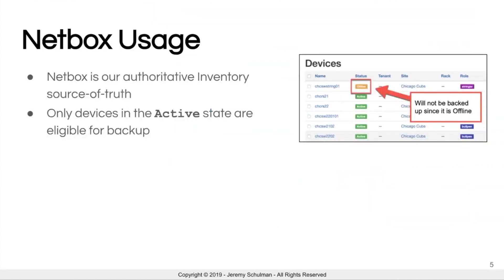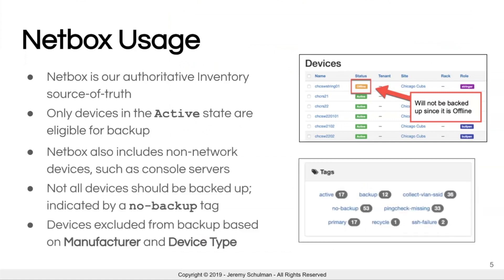Specifically with NetBox, it is our inventory source of truth. We only want to back up devices that are in the active state — whether a user manually put a device into an offline state for maintenance, or our audit remediation systems automatically set that offline state. NetBox also includes devices that are not network-oriented, like console servers. We use the tagging mechanism within NetBox to tactically say which devices we don't want to back up — whether specific to a manufacturer like all our console servers, or just certain devices at certain points in time. Tags are used as a means to determine whether or not we want to perform a service, in this case backup.